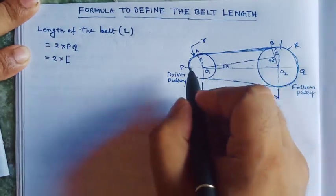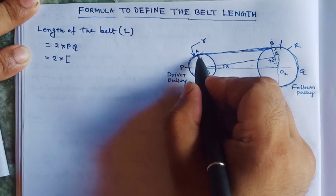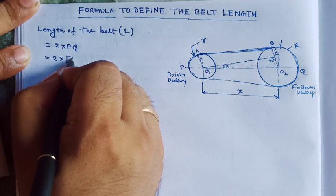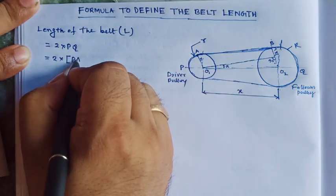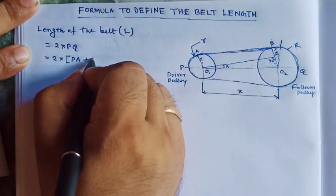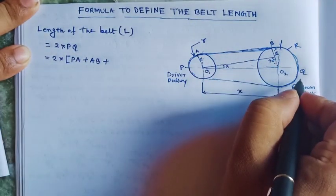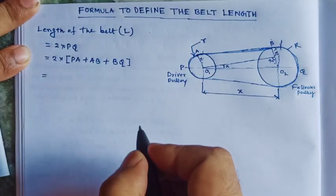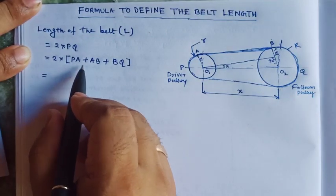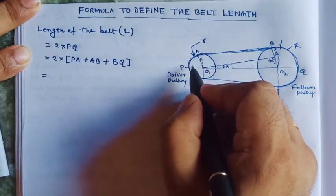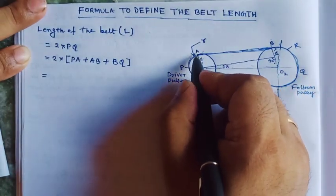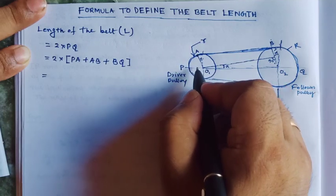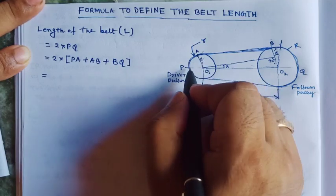PQ equals P to A, plus A to B, plus B to Q. So I can write L = 2 × (PA + AB + BQ). Therefore we have to find PA and BQ. PA is the curve drawn from P to A — how we can find it: this is the radius into this angle.